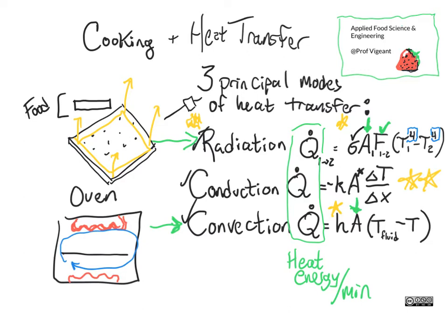Convection depends on a temperature difference between the fluid — in this case the air in the oven — and the temperature of the item we are cooking, which is the temperature of our crackers. The temperature of the crackers changes over time, so this is not a constant: as we leave the baked good in the oven, its temperature goes up, so less energy comes in this way over time, which makes sense.